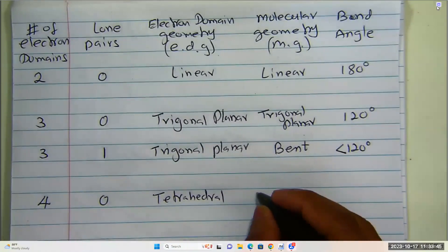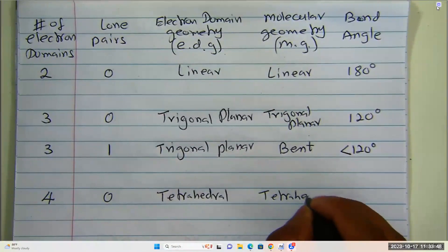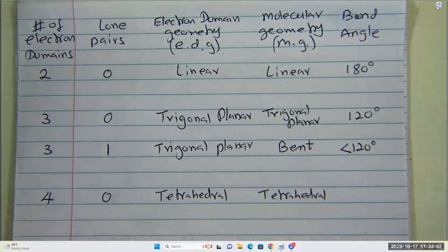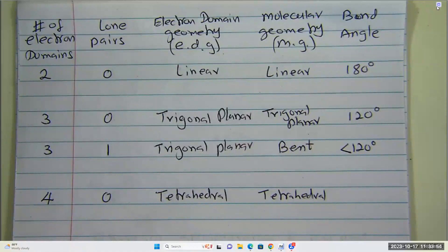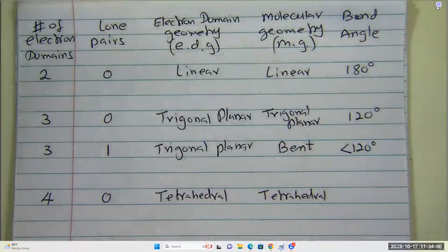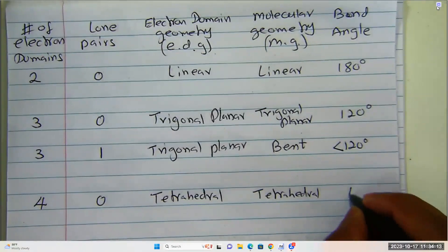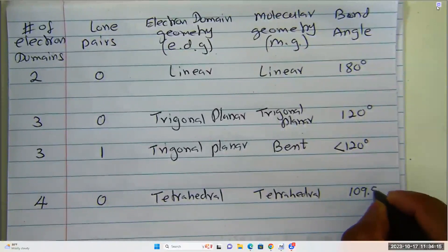Four electron domains, zero lone pairs — meaning all my electron domains are bonding electron domains — that geometry is called tetrahedral. The molecular geometry is tetrahedral as well. The bond angle is 109.5 degrees for a perfect tetrahedral geometry.